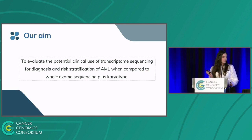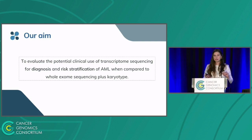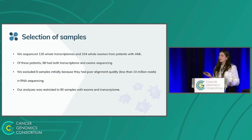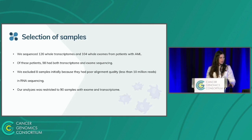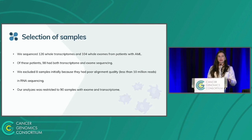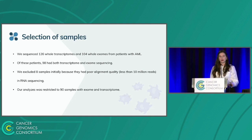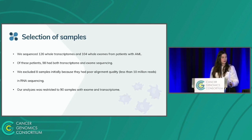Our aim was to evaluate the potential clinical use of transcriptome sequencing for diagnosis and risk stratification of AML when compared to whole exome sequencing plus karyotype. We sequenced 126 whole transcriptomes and 104 whole exomes from AML patients, of which 98 had both. We excluded 8 samples due to poor alignment quality — less than 10 million reads on RNA mapping — leaving 90 samples for analysis.